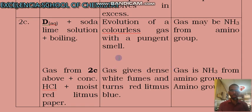You come to the second portion, or the second part of the test rather. You want to test for that gas. So you see gas from 2C above plus conch HCl plus moist. Moist is very important. And this concentrated is very important because these are the conditions under which you get the required effect.